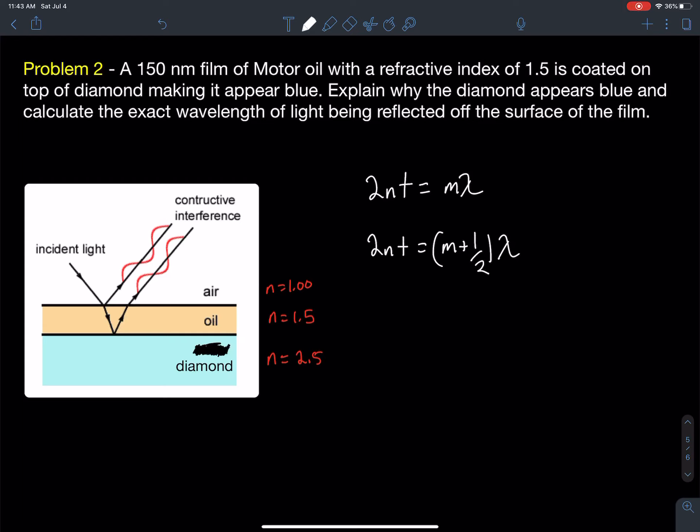Which of these equations are we going to use to actually calculate the specific wavelength of light that's coming off of the diamond? Those are the two equations. To explain why the diamond appears blue, in general, blue is a wavelength between 350 and 450 nanometers.